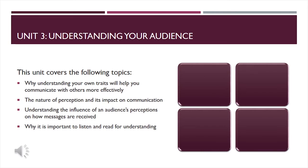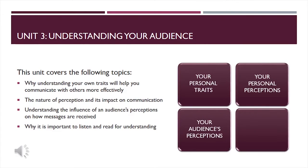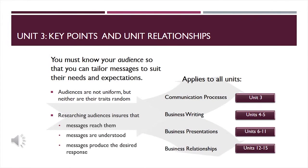Unit 3 in this course focuses on audiences — the people you want to influence through communication. In this unit, you will learn why understanding your own traits will help you communicate with others more effectively, what perception is and how your perception and your audience's perception play a role in communication, and why it is important to listen and read for understanding. The key point in Unit 3 is that you must know your audience so that you can tailor messages to suit their needs and expectations. This is necessary because audiences are not uniform, and yet the characteristics they possess are not random. Effective communicators research the characteristics of their audience to ensure that messages reach them, are understood, and produce the desired response.